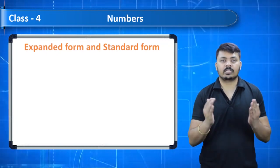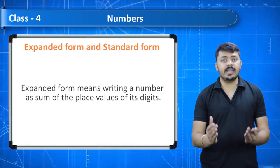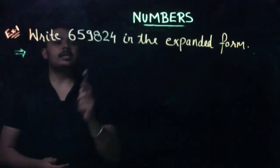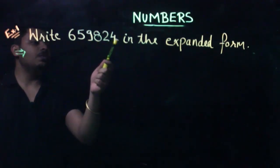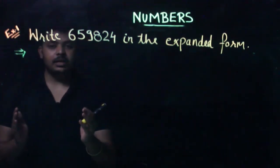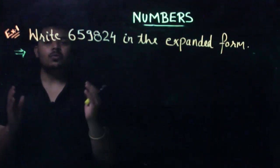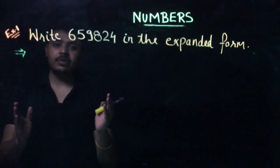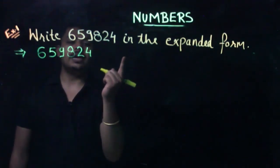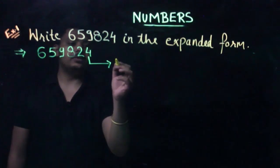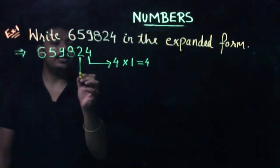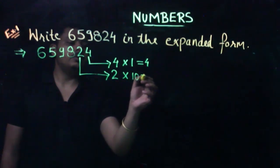Expanded form means writing a number as the sum of the place values of its digits. Let's look at an example: write 6,59,824 in expanded form. We start from the rightmost digit — 4. The place value of 4 is 4 × 1 = 4. For 2, the place value is 2 × 10 = 20. For 8, it is 8 × 100 = 800.